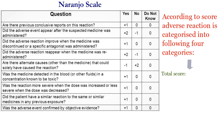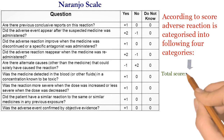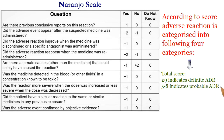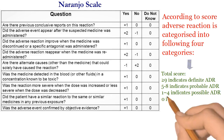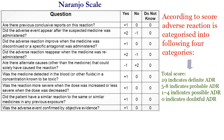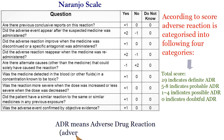According to the total score, the likelihood of occurrence of an adverse reaction due to a particular drug treatment is estimated. If the total score is greater than or equal to 9, it indicates a definite relationship between the adverse effect and the medicine concerned. If the total score is between 5 to 8, then there is a high probability of a causal relationship between the medicine and the adverse effect.